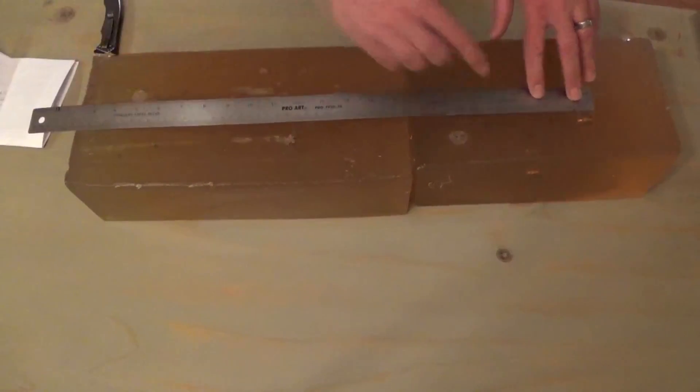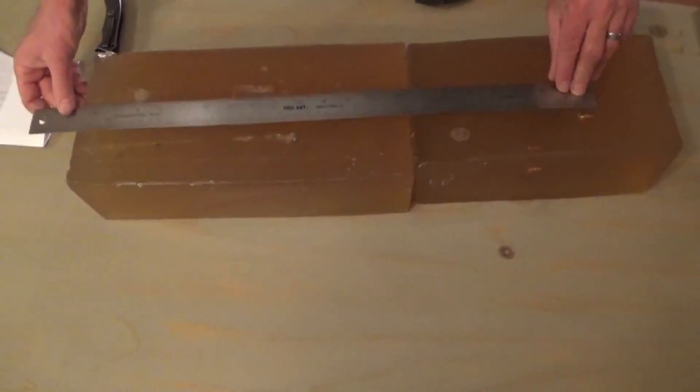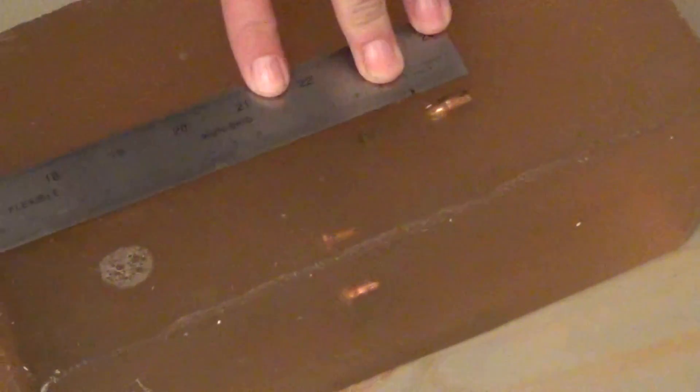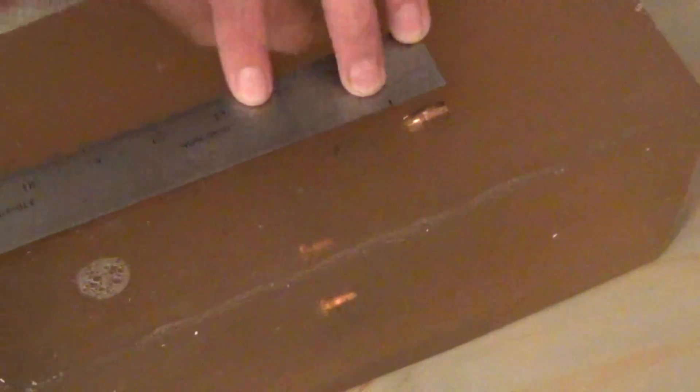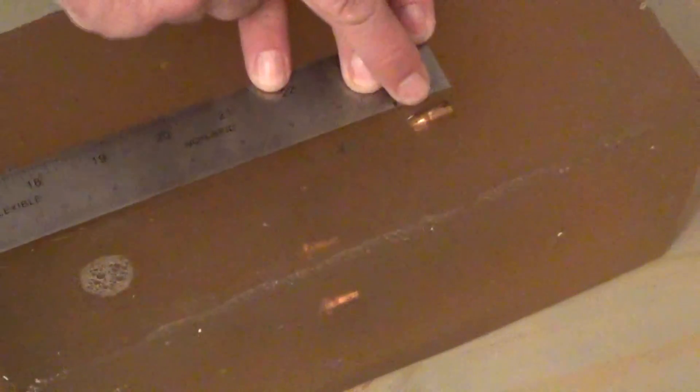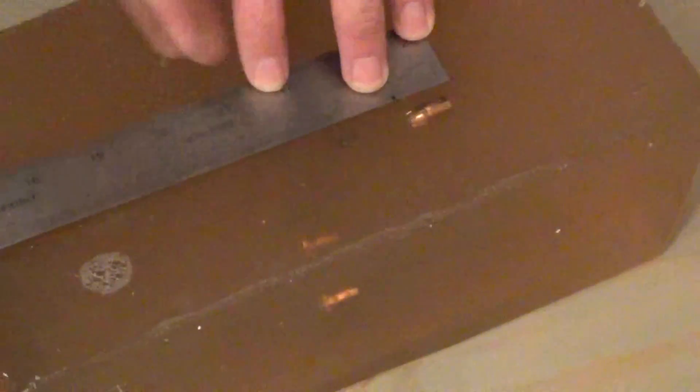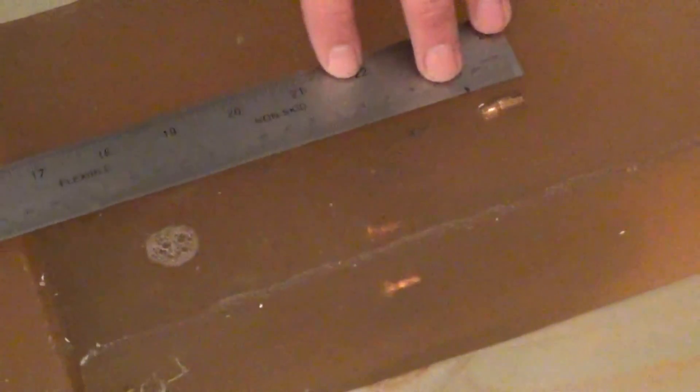The first two I want to show you are from the 38 Special. Both of them managed to spin and go in backwards. About halfway through, both of them spun. This one, we'll open it up later, but it looks like it completely failed to expand, and the other one looks like it expanded a little bit. We've got measurements for both of those.